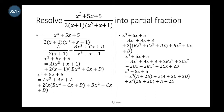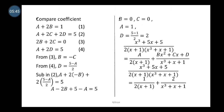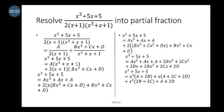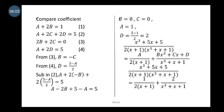There is no x² term on the left-hand side, which means its coefficient is zero. On the right-hand side the coefficient of x² is 2B + 2C, so equation 3: 2B + 2C = 0. The constant on the left is 5, and on the right is A + 2D, giving equation 4: A + 2D = 5.